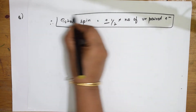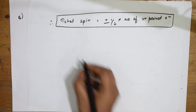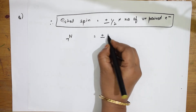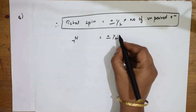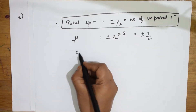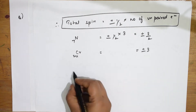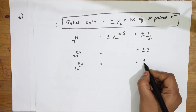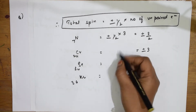Applying the total spin formula directly using unpaired electrons from the electronic configurations: For nitrogen (3 unpaired), total spin = ±3/2. For chromium (6 unpaired), total spin = ±3. For selenium (2 unpaired), total spin = ±1. For krypton (0 unpaired), total spin = 0.